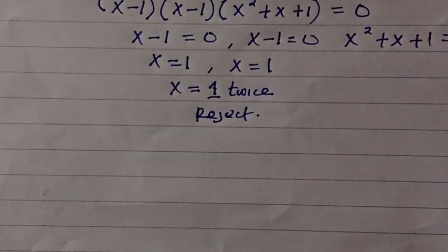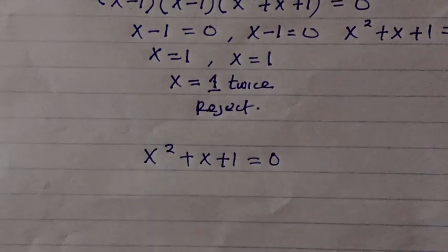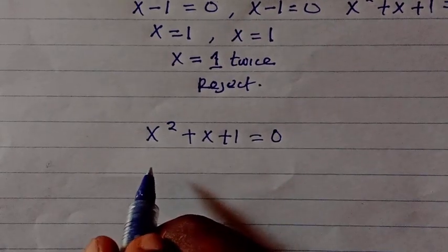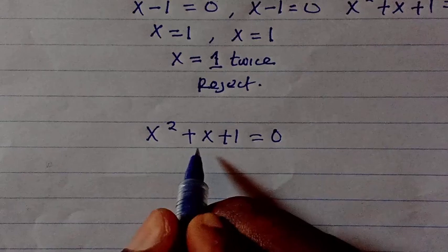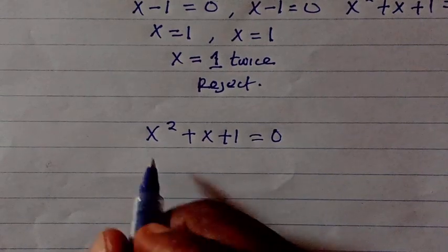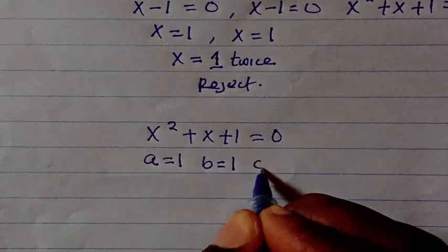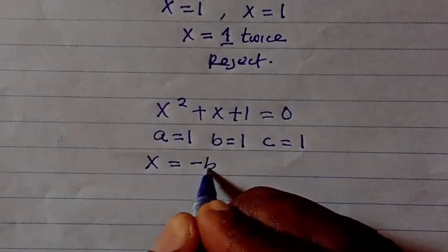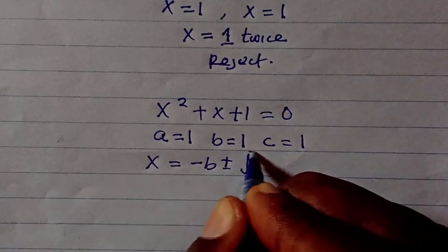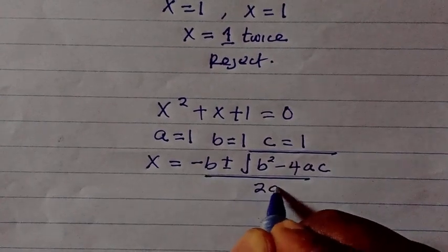So we work on x squared plus x plus 1 equals 0 to get the solution. You can apply the quadratic formula to solve this, since you cannot factorize it, or we can apply the completing the square method. Let's apply the quadratic formula: here we have a equals 1, b equals 1, and c equals 1. We put them into the formula: x equals negative b plus or minus the square root of b squared minus 4ac, all divided by 2a.